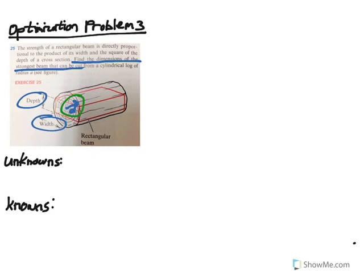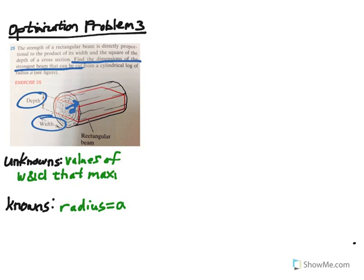We can't make the log any bigger, but we can adjust the depth and the width of the beam cut from this log. So, the radius A is a constant. The unknowns we're trying to solve for are the values of width and depth that maximize the strength, which we'll call S.